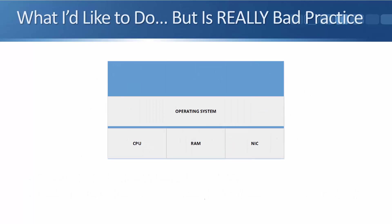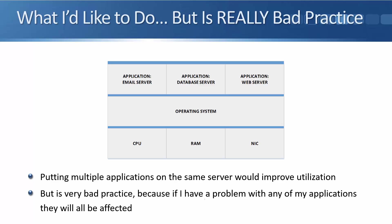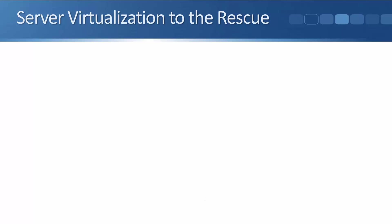All those servers are using power, taking up rack space, and requiring cooling. To get better utilization, I could install the mail server, database server, and web server applications all on one server with one OS. This would give much better utilization, but putting multiple applications on the same server is very bad practice — if I have a problem with any one application, it's liable to take all three down.